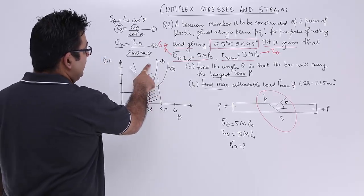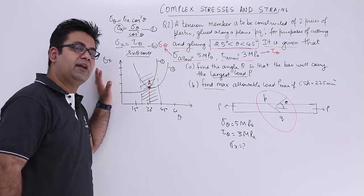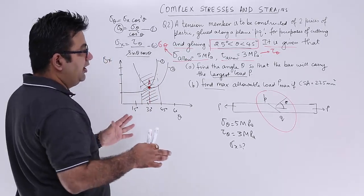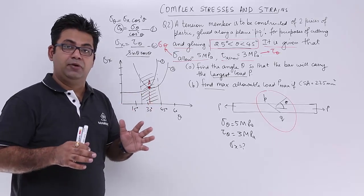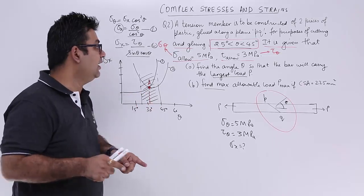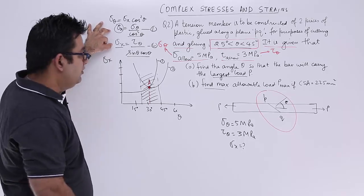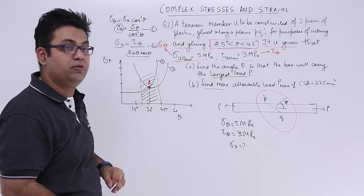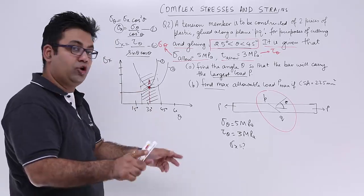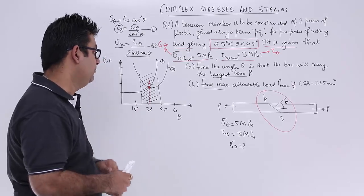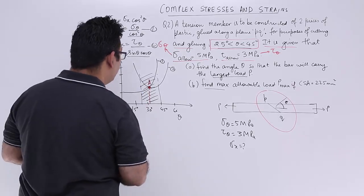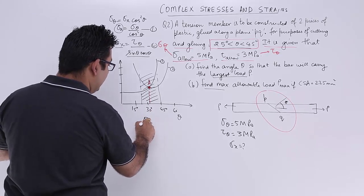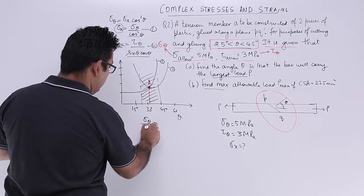So let us equate these two equations. This is entirely a graphical portion. To get the maximum value, you have to equate these two equations. If you equate the two equations, you will get the maximum value of sigma x, and corresponding to that maximum value of sigma x, you'll get a value of theta.